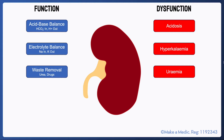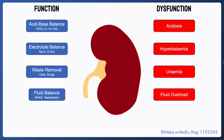The kidneys are the main way in which fluid is removed from the body, and fluid balance is tightly regulated by two main hormonal systems: the renin-angiotensin-aldosterone system and vasopressin. An inability to appropriately excrete fluid in the urine can result in fluid overload.